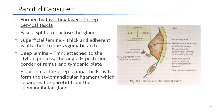The superficial lamina is thick and adherent, attached to the zygomatic arch. The deep lamina is thin, attached to the styloid process, the angle and posterior border of ramus, and the tympanic plate. A portion of the deep lamina forms the stylomandibular ligament, which separates the parotid from the submandibular gland.